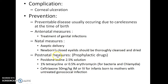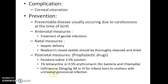Coming to the postnatal measures, prophylactic drugs should be given such as povidone iodine 2.5% solution, 1% tetracycline, or 0.5% erythromycin — these are effective for bacteria and chlamydia. Ceftriaxone 50 mg per kg IM or IV should be given for infants born to mothers with untreated gonococcal infection.